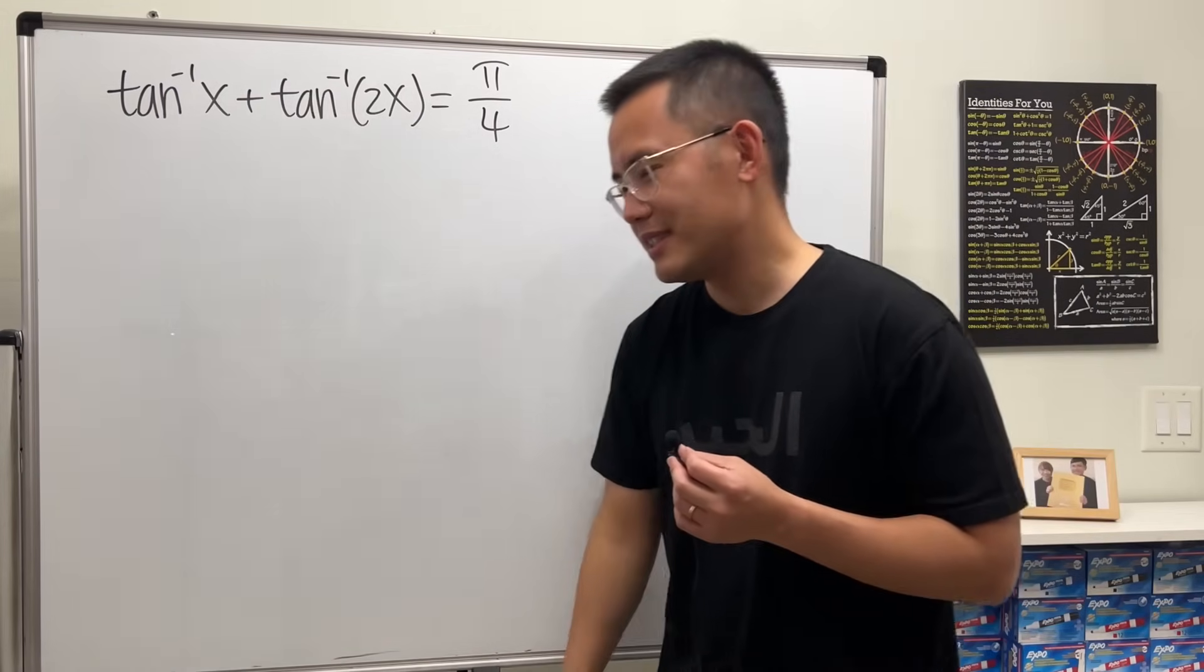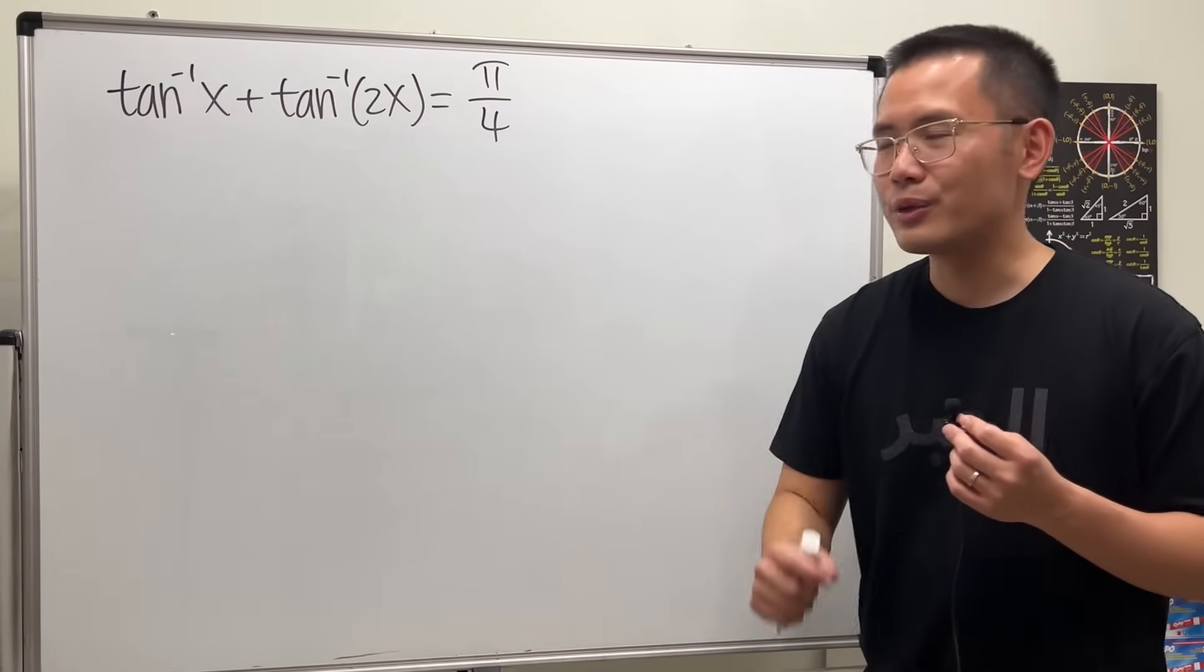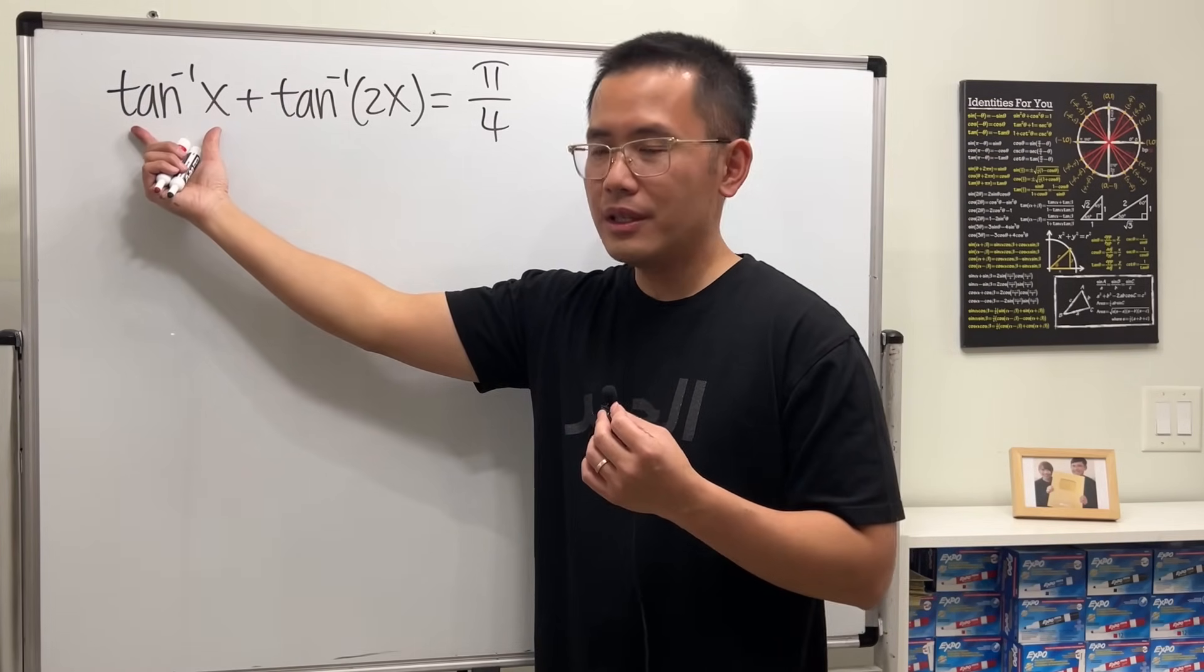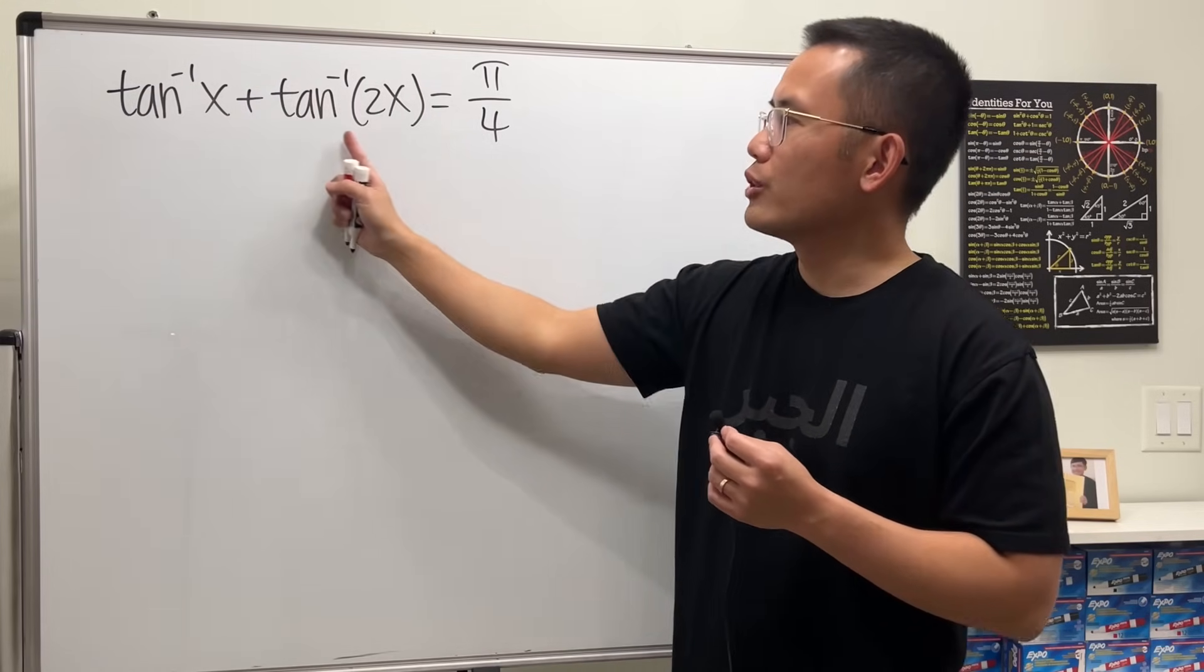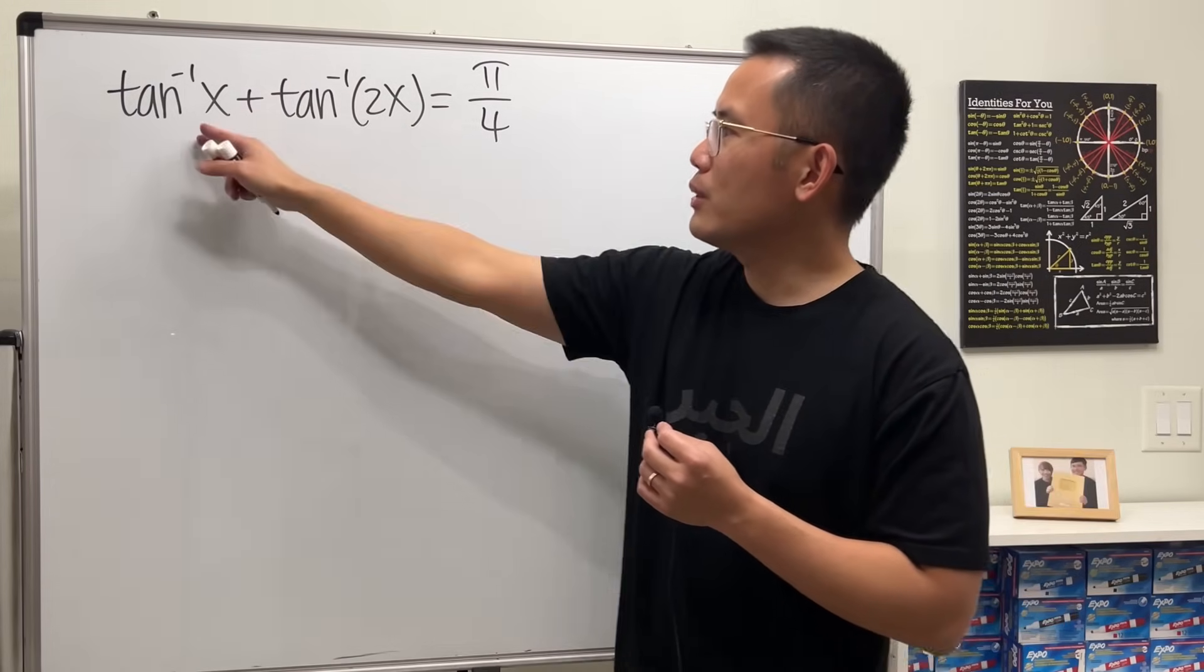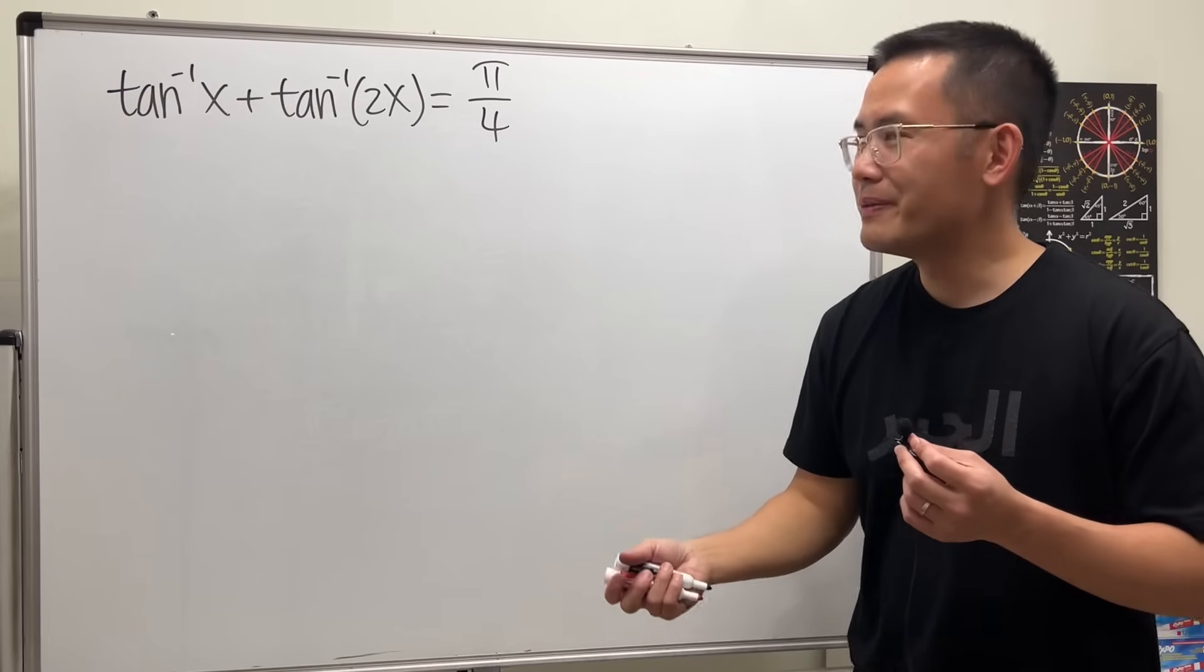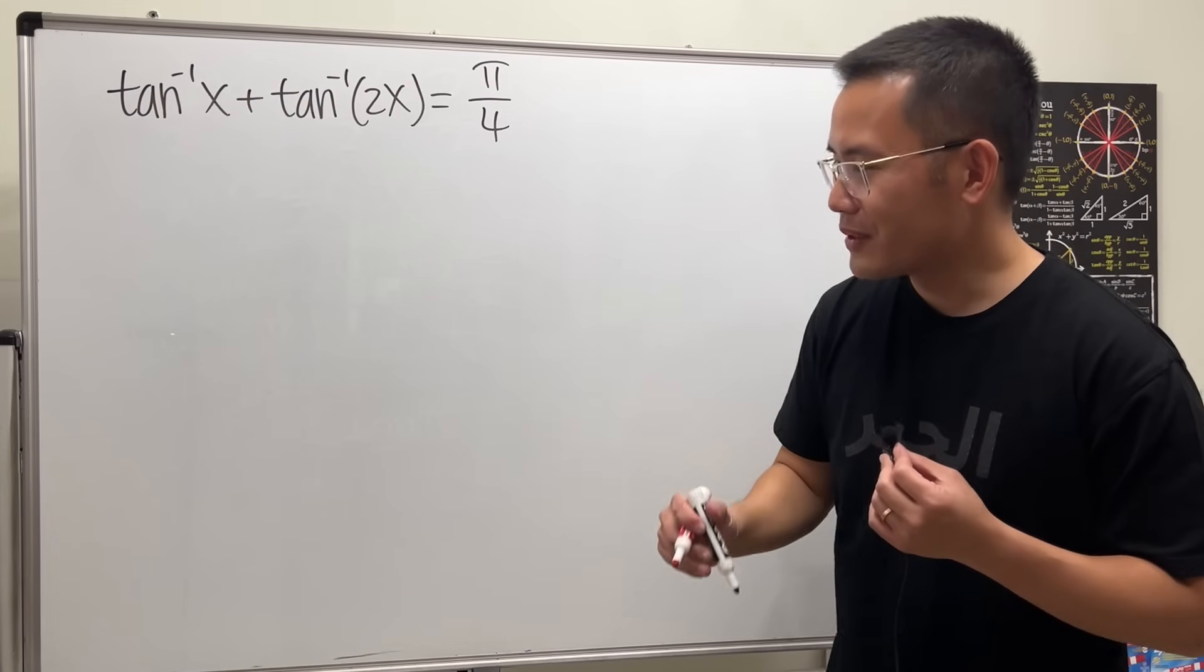How do we even deal with this? We have two inverse tangents. This is the difficult part. But we have to know that the result of an inverse trig function represents an angle. So this is an angle, and this is also going to be an angle. So two angles add up to pi over 4. What's the best way to do this? Well, let's use the original tangent.